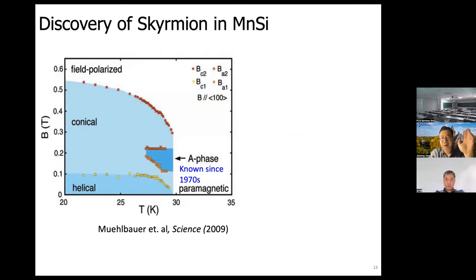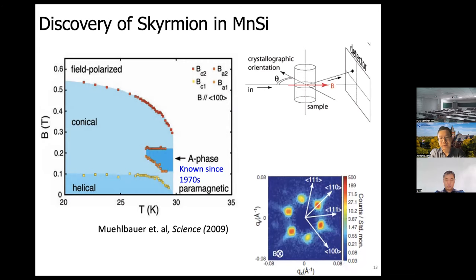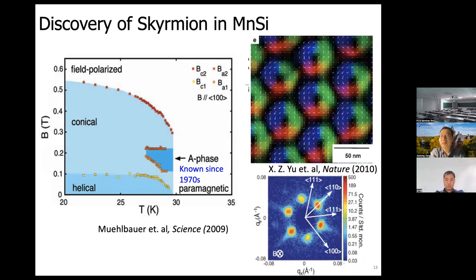This is the phase diagram of MnSi: horizontal axis is temperature, vertical axis is magnetic field. The system undergoes successive transitions from helical to conical to spin-polarized. But at finite temperature there is a phase that has been known since the 1970s without clear identification — until 2009, when Christian Pfleiderer's group at TU Munich used small-angle neutron scattering and confirmed a hexagonal pattern in reciprocal space, explained only by a triangular lattice of skyrmions.